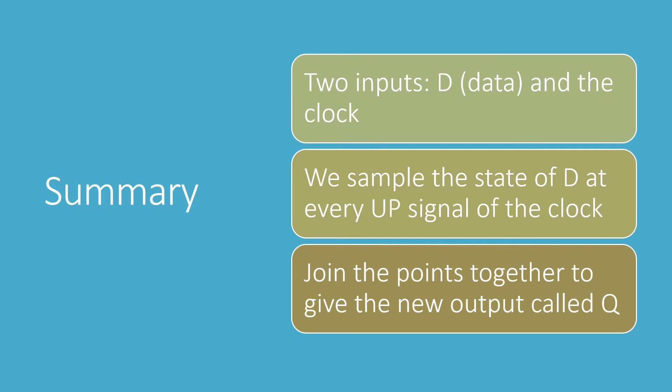So, in summary, a D-type flip-flop has two inputs. D stands for data and a clock signal. We sample the state of D at every up signal of the clock. And then we join the points together to give a new simpler output, which is conventionally called Q.